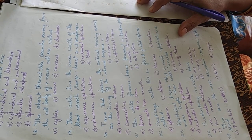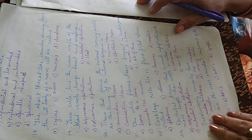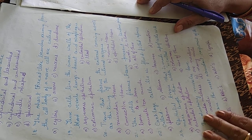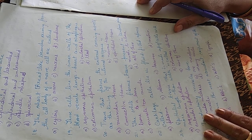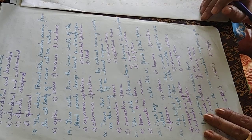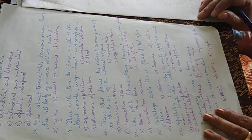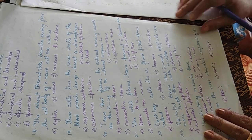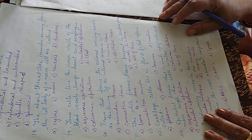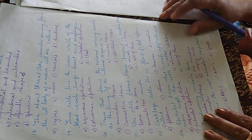Nineteenth question: these cells line the inner walls of blood vessels, lungs, heart and esophagus. Options are squamous epithelium, cuboidal epithelium, columnar epithelium, and blood. The nineteenth answer is squamous epithelium, which forms the lining of the blood vessels, lungs, heart and esophagus.